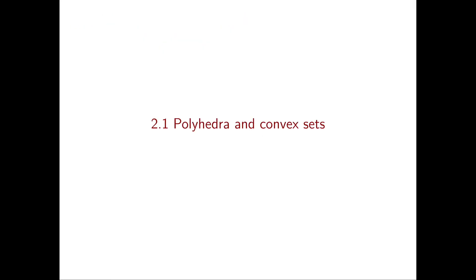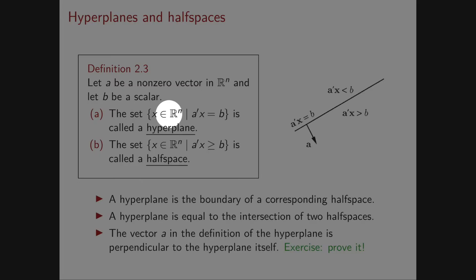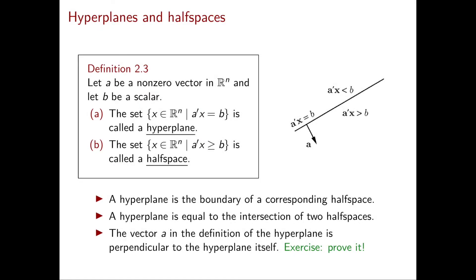In section 2.1 we're going to discuss polyhedra and see a third fundamental property of linear programming. To define polyhedra, we first need to define hyperplanes and half spaces. A hyperplane is a set of the form {x ∈ Rⁿ : Aᵀx = b} for some vector A in Rⁿ and scalar b. We have seen hyperplanes in dimension 2 as lines, and in dimension 3 as two-dimensional planes.